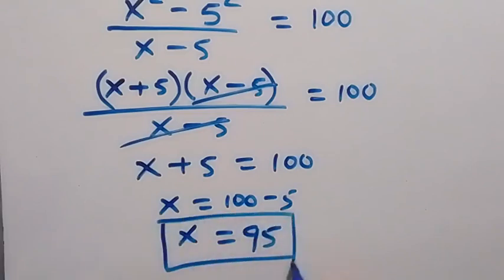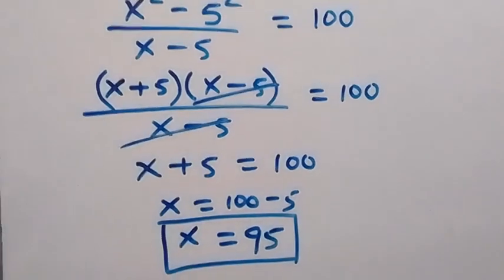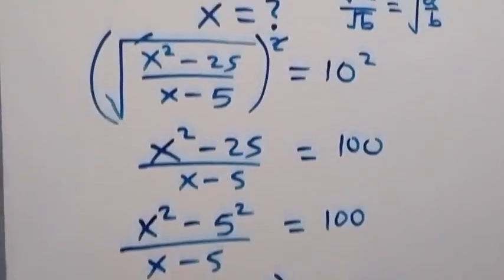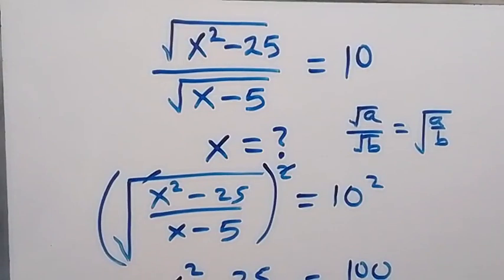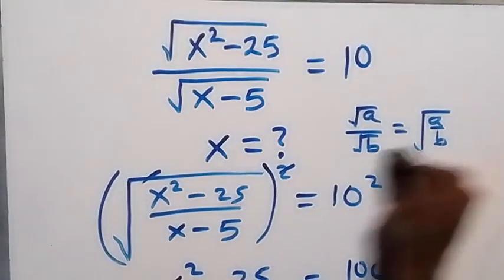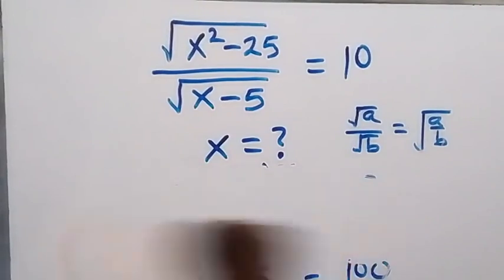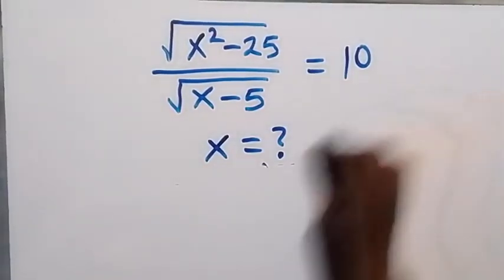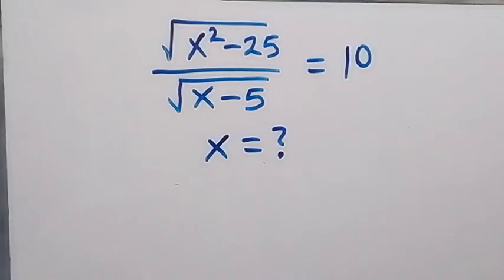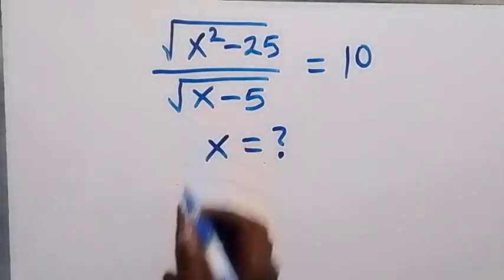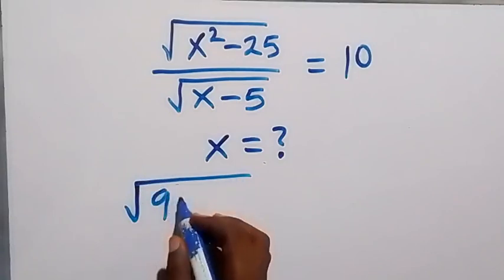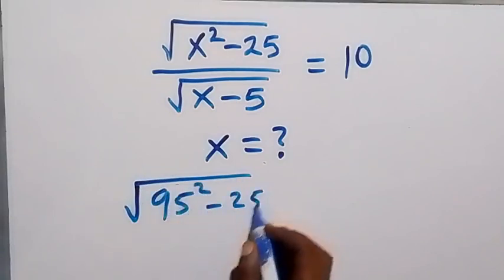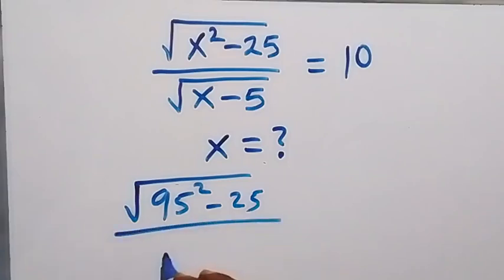We have 95 as the value of x. Now let's quickly check to confirm if this satisfies the given equation. We substitute x equals 95, giving us the square root of 95 squared minus 25, divided by the square root of 95 minus 5.